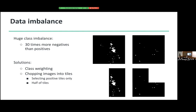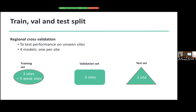I still want to keep that site because it has a lot of images in my dataset. But after selecting the positive tiles, I had about half of my dataset left. In my train, validation, and test split, I performed regional cross-validation — because I want a model that generalizes between sites. I want to test if a model performs on unseen sites and whether it generalizes. So I'm training four models, one per site: for each model I leave one site out for the test set, and the other three sites are used in training and validation. The weak sites from unvalidated data are used in training only, not in validation.